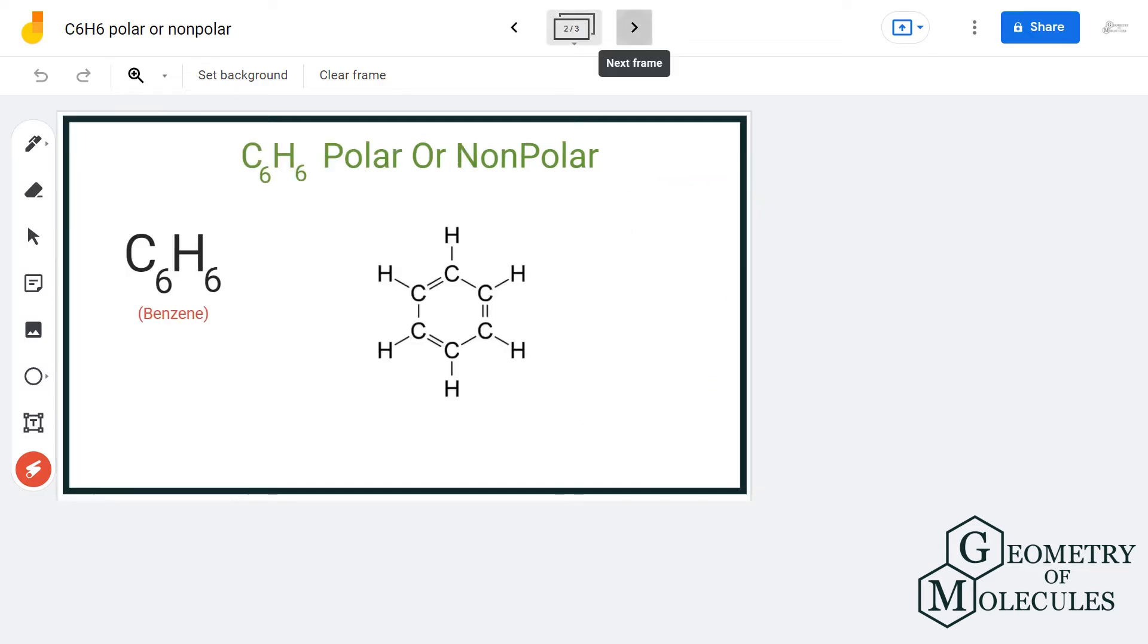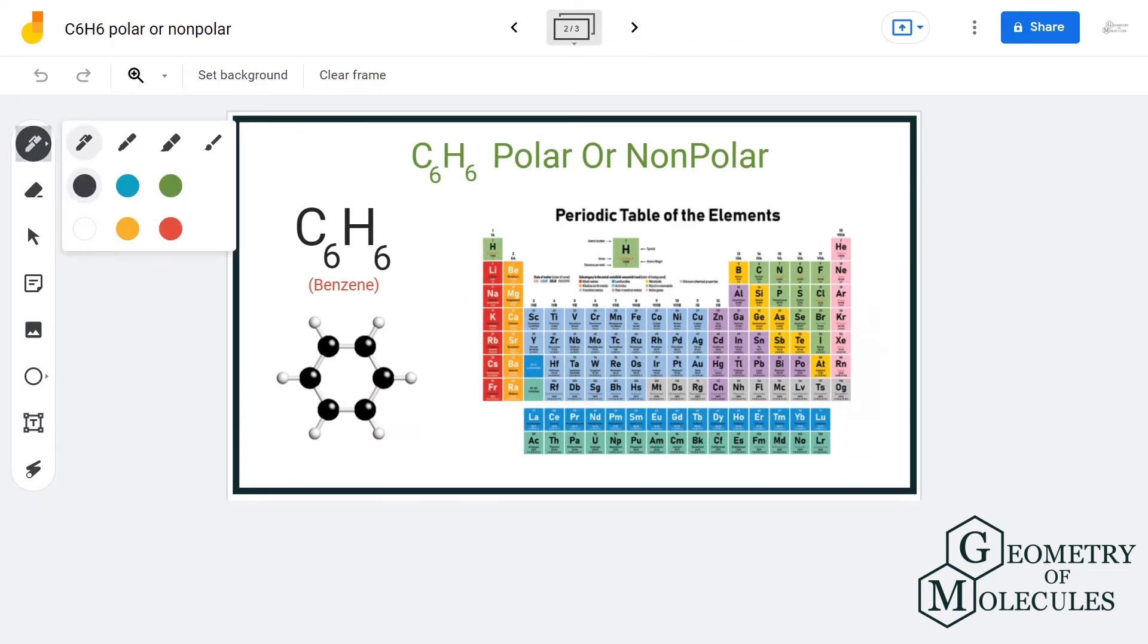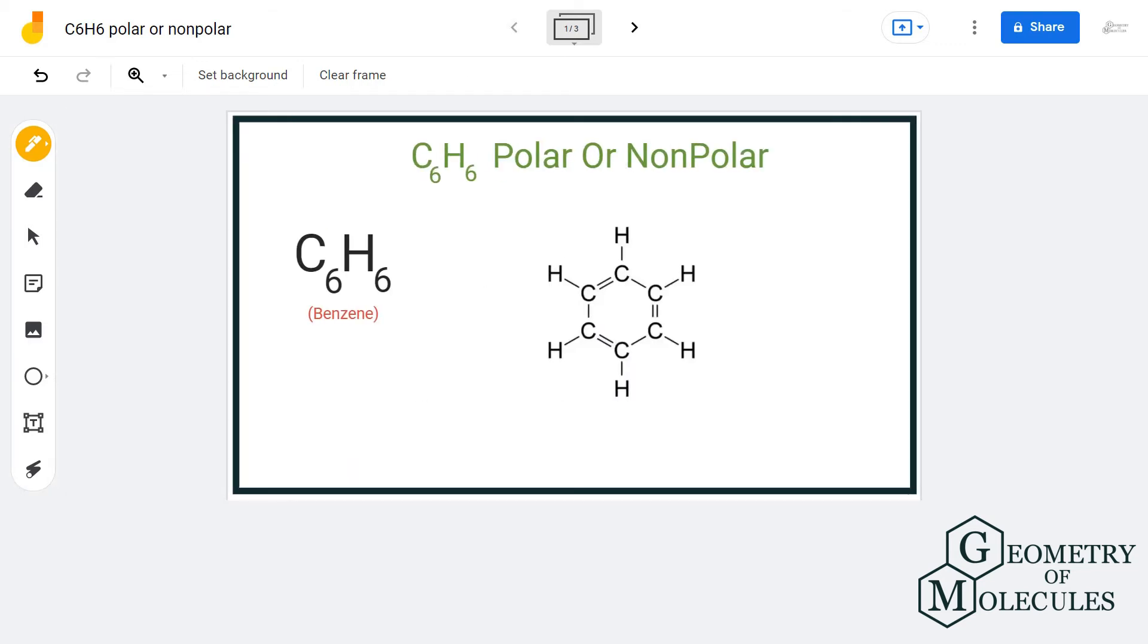Now if you look at the electronegativity values - for carbon it is 2.55, for hydrogen it is 2.20. If you calculate the difference, it will be 0.35. So these bonds are not completely polar between carbon and